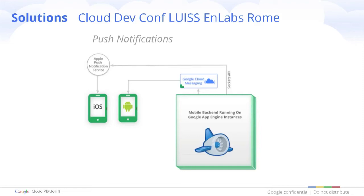Cloud messaging is the right toolkit for that. You can push technical messages to the app instances you have. We have also worked on the iOS world — Apple Push Notification Service, which is similar to GCM, allows you to push messages from the backend to iOS instances as well.